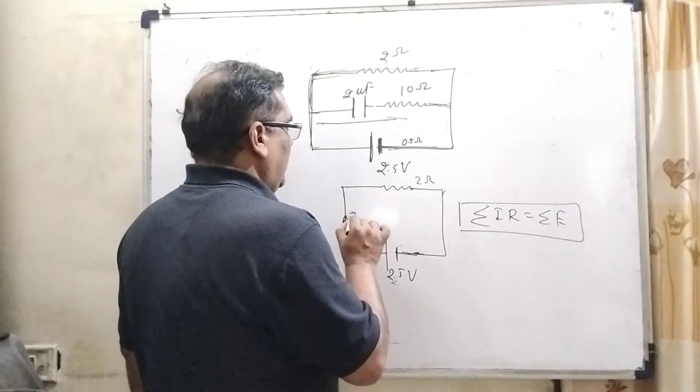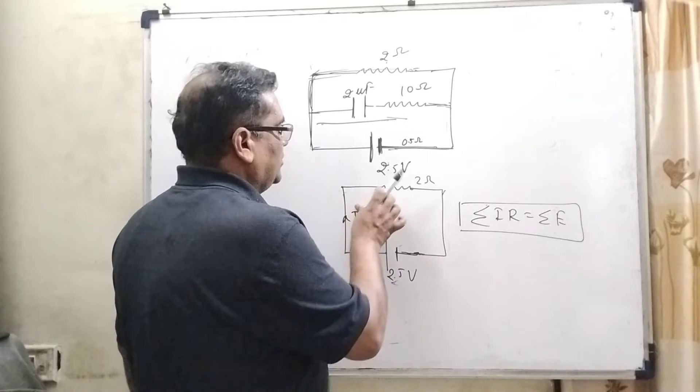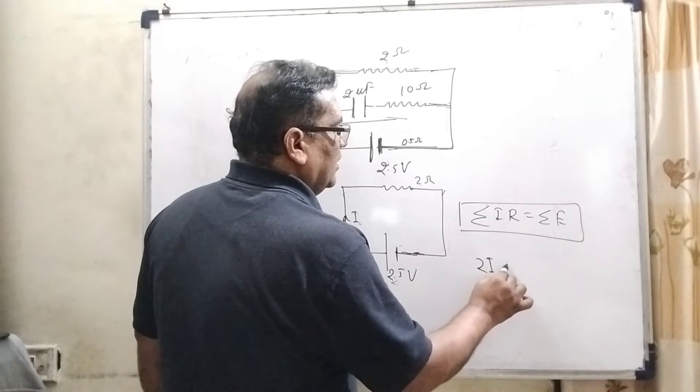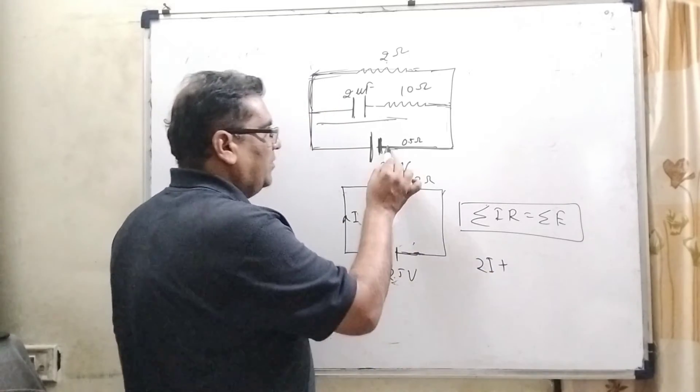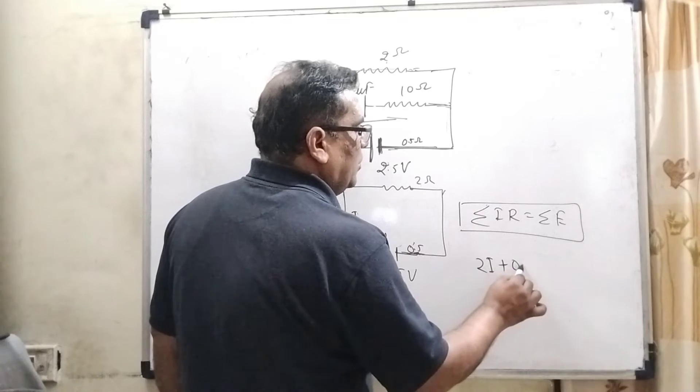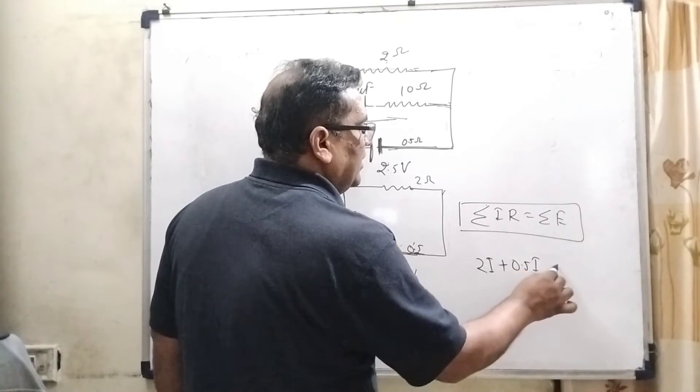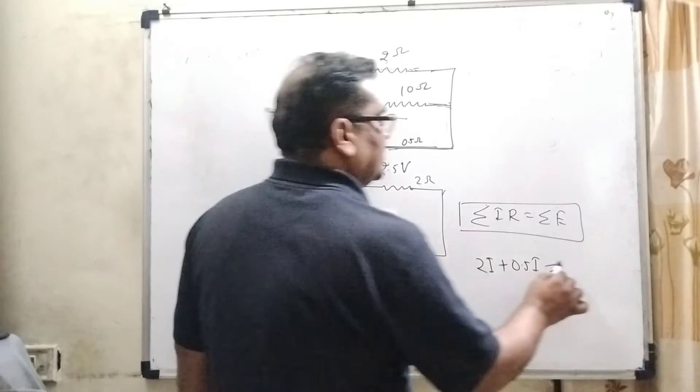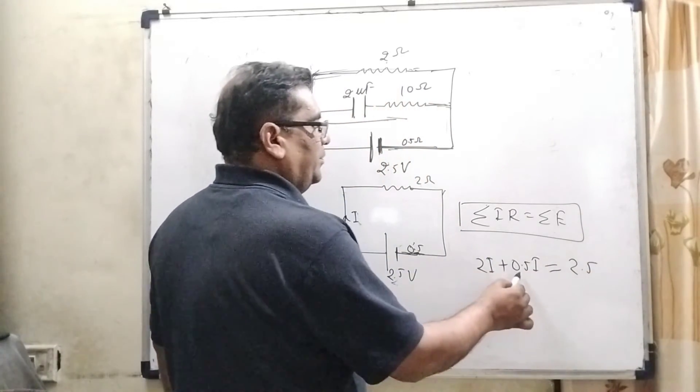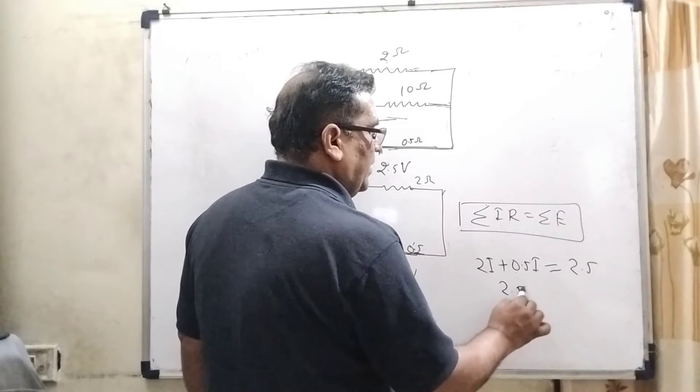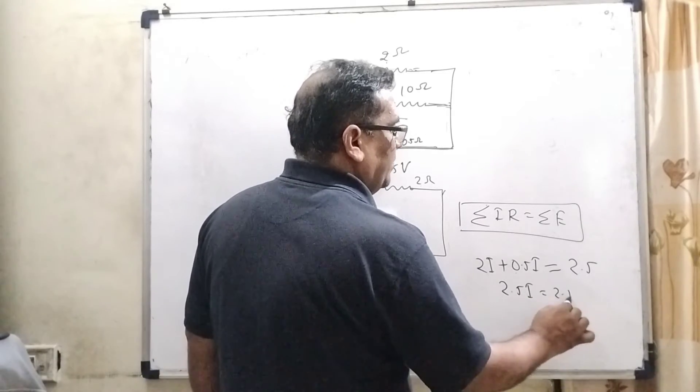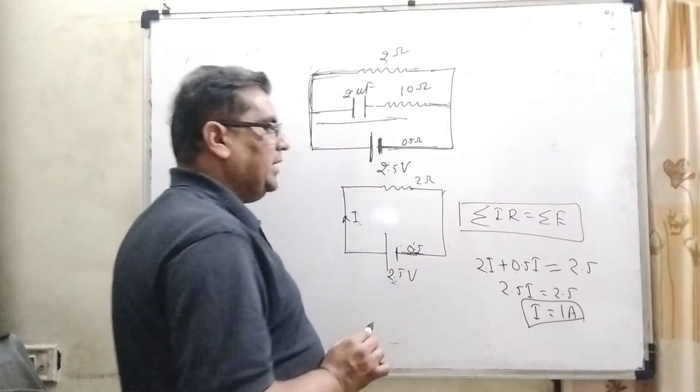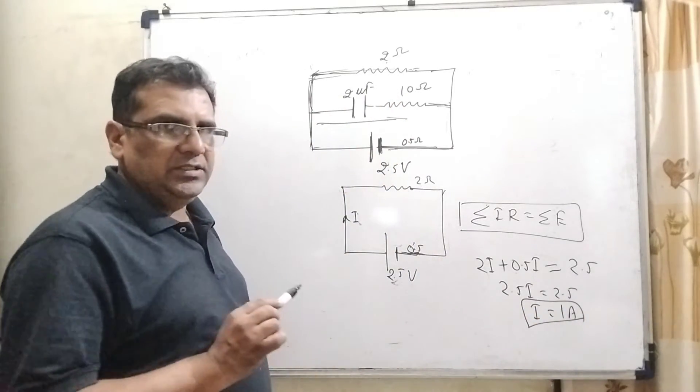Let us say I is the amount of current. Here 2 is resistance plus internal resistance of this battery is given 0.5. So 0.5 into I plus 2 into I is equal to what is the EMF? That is 2.5 volt. So 2 plus 0.5, that is 2.5, is equal to 2.5, then I is equal to 1 ampere. Here we get the amount of current that is 1 ampere.